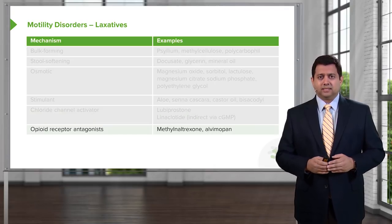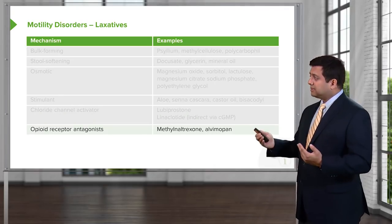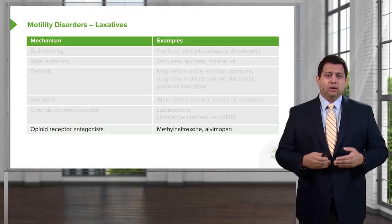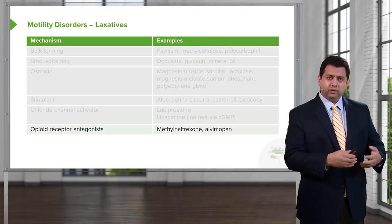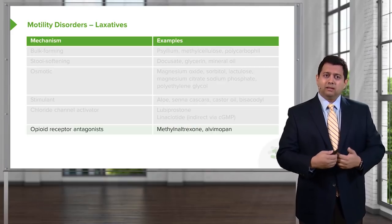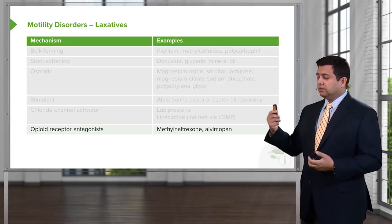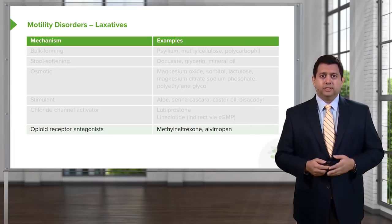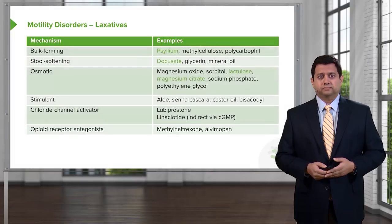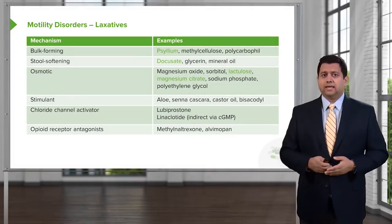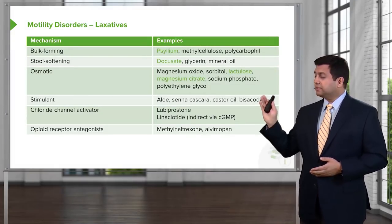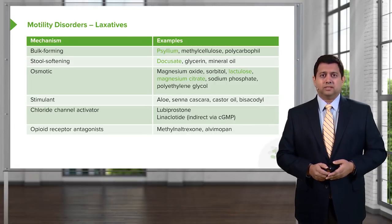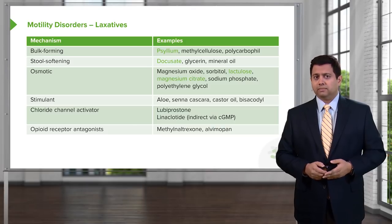Finally, opioid receptor antagonists are an interesting way of treating patients. We know that opioids are constipating, so by blocking the opioid receptor, we believe this will reduce constipation, particularly in patients who are on opioids. That covers the list of laxatives, and we'll present this slide as a downloadable resource so you can have it in your own slide library.